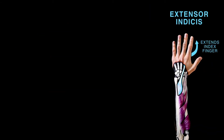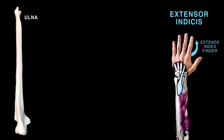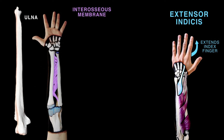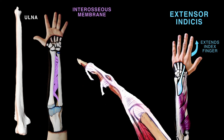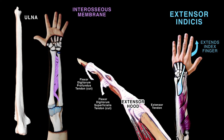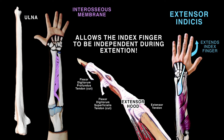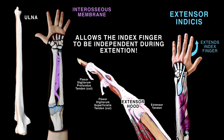Extensor indicis originates from the posterior surface of the ulna and the interosseous membrane. It attaches to the extensor hood of the index finger and allows it to be independent from other fingers during extension.